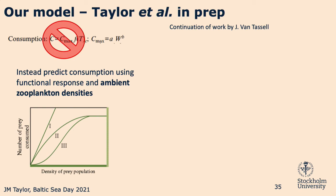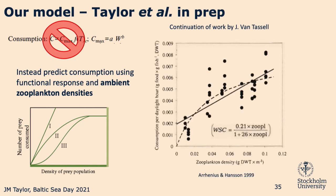What is a functional response? It's basically a change in prey consumption based on the density of prey found. There are three different types: type 1, type 2, and type 3. The functional response of herring consumption with zooplankton around the ASCO area was already done by Arrhenius and Hansen. Herring have a type 2 functional response, which means they're limited by how quickly they can digest prey.